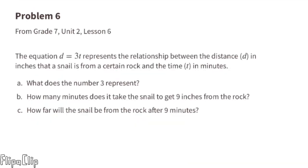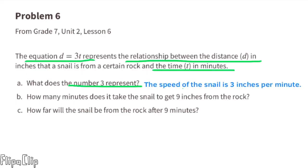Problem number six from seventh grade, Unit 2, Lesson 6. The equation d = 3t represents the relationship between the distance d in inches that a snail is from a certain rock and the time t in minutes. A: What does the number 3 represent? The speed of the snail is 3 inches per minute. That's the constant of proportionality. B: How many minutes does it take the snail to get 9 inches from the rock?